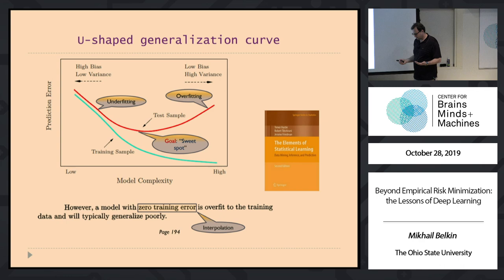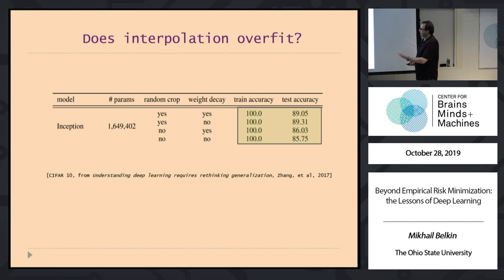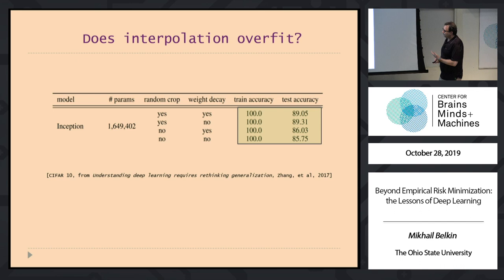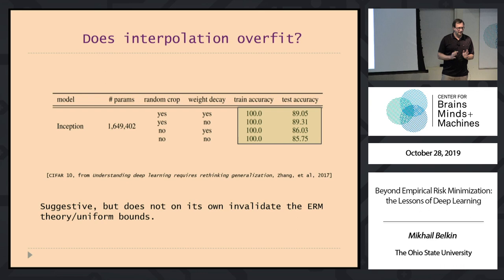Recently there have been cracks in this framework. An influential paper by Zhang et al. observed that you can train a neural network to have 100% accuracy on training data and the test accuracy is still very good. So if you're over-fitting, you are not over-fitting significantly — maybe there is no over-fitting. This is suggestive that something is going on.